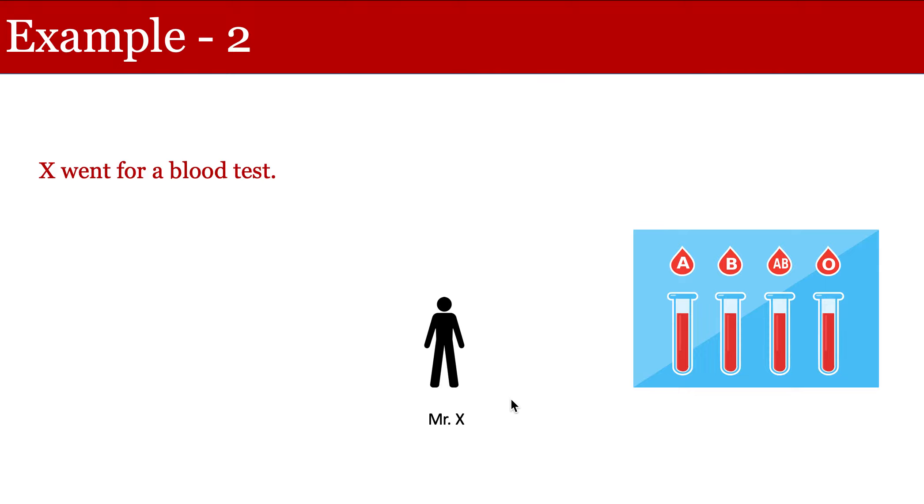So the thing is, what I am trying to say here is sometimes there are some constraints. Because of those constraints, we cannot have access to the entire population. So in this case, the population will be the entire blood of this person. But because of this constraint, we can get only a small amount of blood. And sometimes we want to save resources.